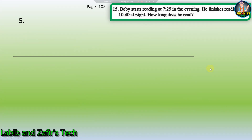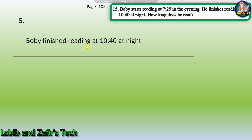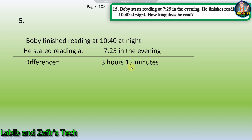Now let's go through our fifth word problem. Bobby starts reading at 7.25 in the evening. He finishes reading at 10.40 at night. How long does he read? This is again the same as the last one — we have to subtract 7.25 from 10.40. Bobby finished reading at 10.40 and started at 7.25. The difference is 3 hours 15 minutes, because 40 minus 25 is 15 and 10 minus 7 is 3. So he reads for 3 hours and 15 minutes.